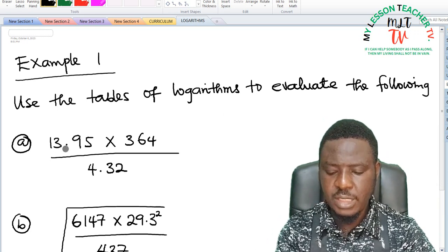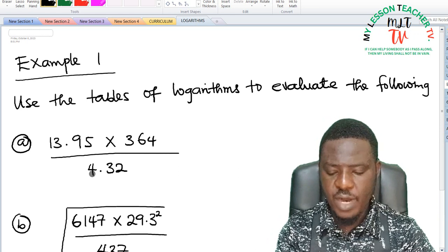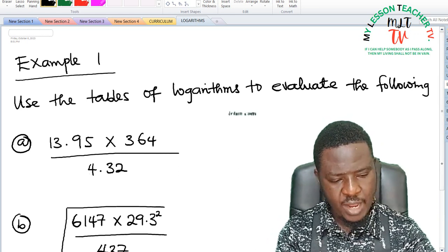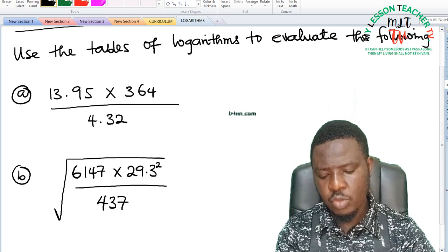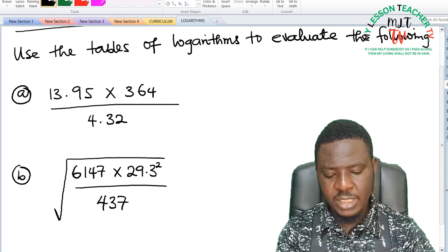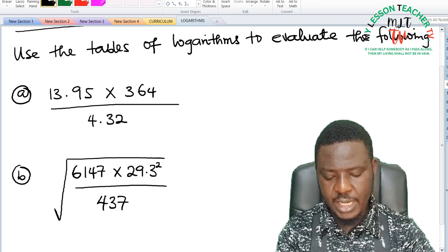Part a is 13.95 times 364 divided by 4.32. Part b we have square root of 6147 times 29.3 squared all divided by 437.